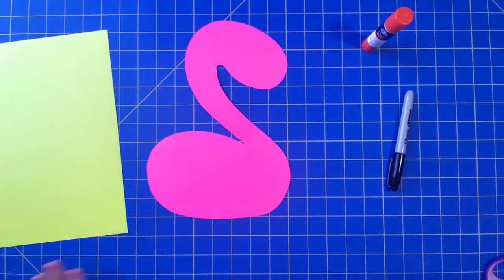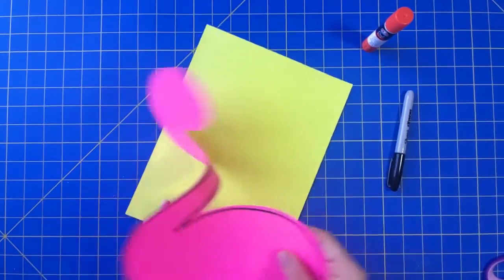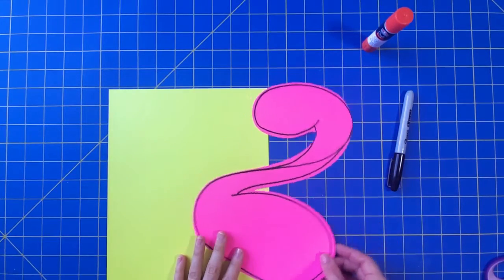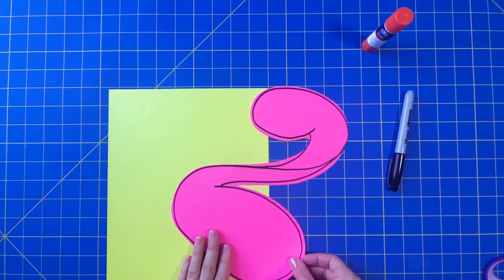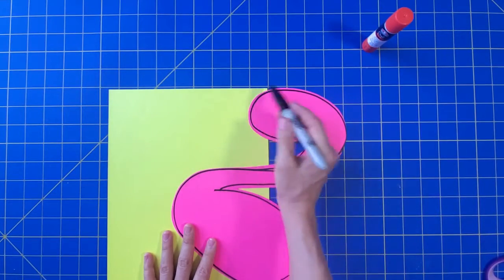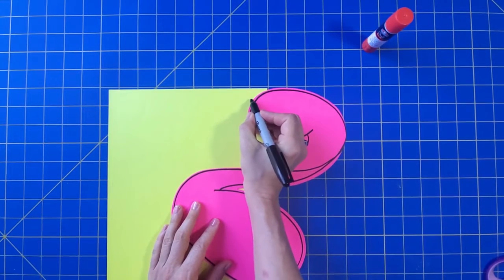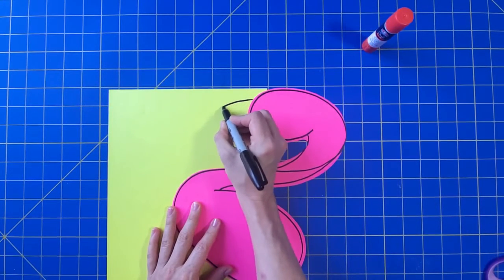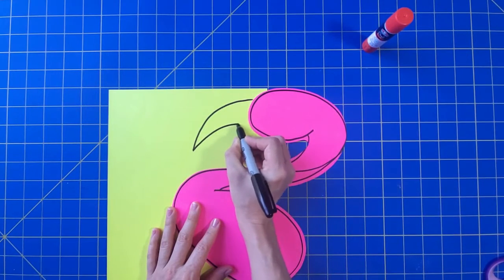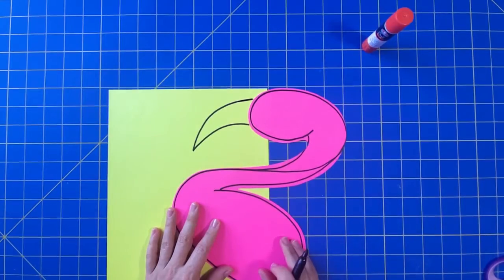All right, so the flamingo body is looking the way I want it to. Now I need to draw the beak. I'm going to flip my flamingo so that it's backwards again, and I'm going to position the head just so I can draw the beak and see that it's going to fit with my head. The beak kind of tips down like this. A flamingo beak looks different than other kinds of birds—it'll look like that.